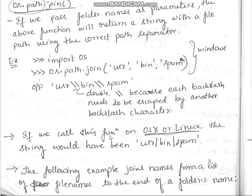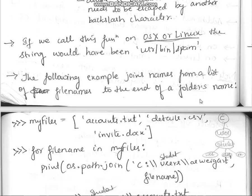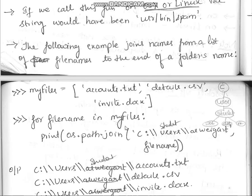The following example joins names from a list of file names to the end of a folder path. We have a list 'my_files' containing 'accounts.txt', 'details.csv', and 'invite.docs'. The code iterates: 'for file_name in my_files: print(os.path.join("C:\\users\\swigart", file_name))'. This attaches each file name to the end of the folder path.